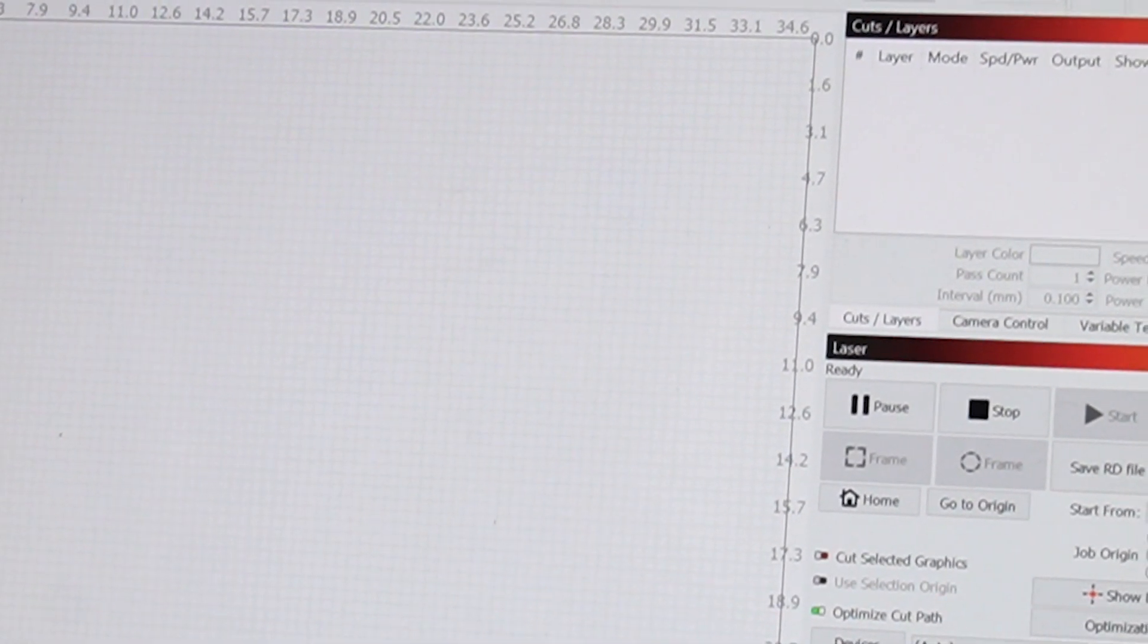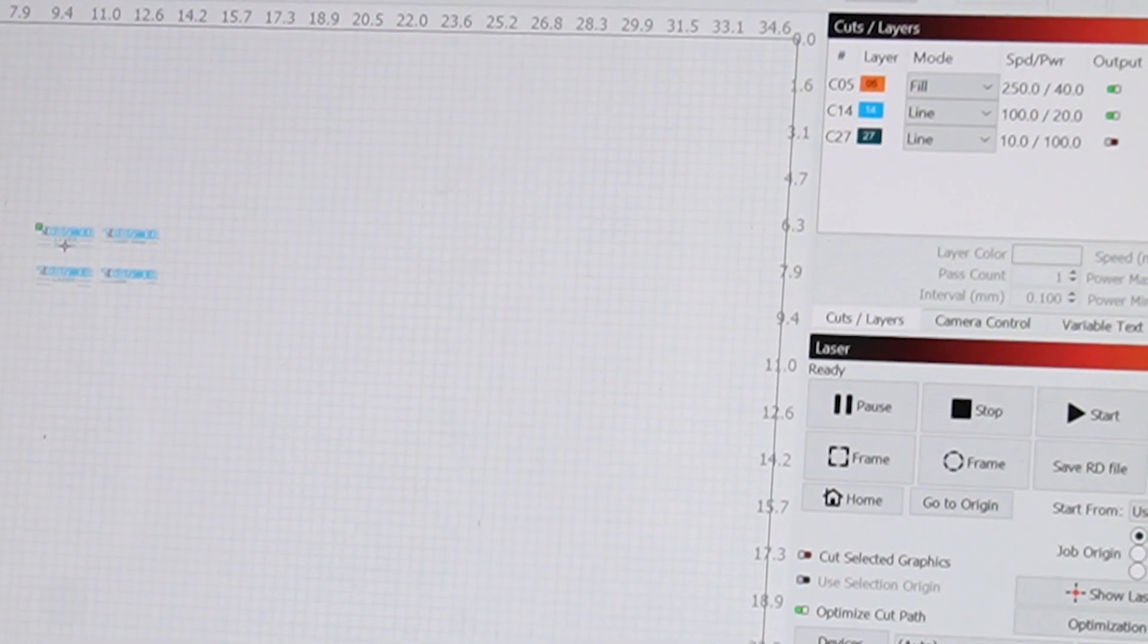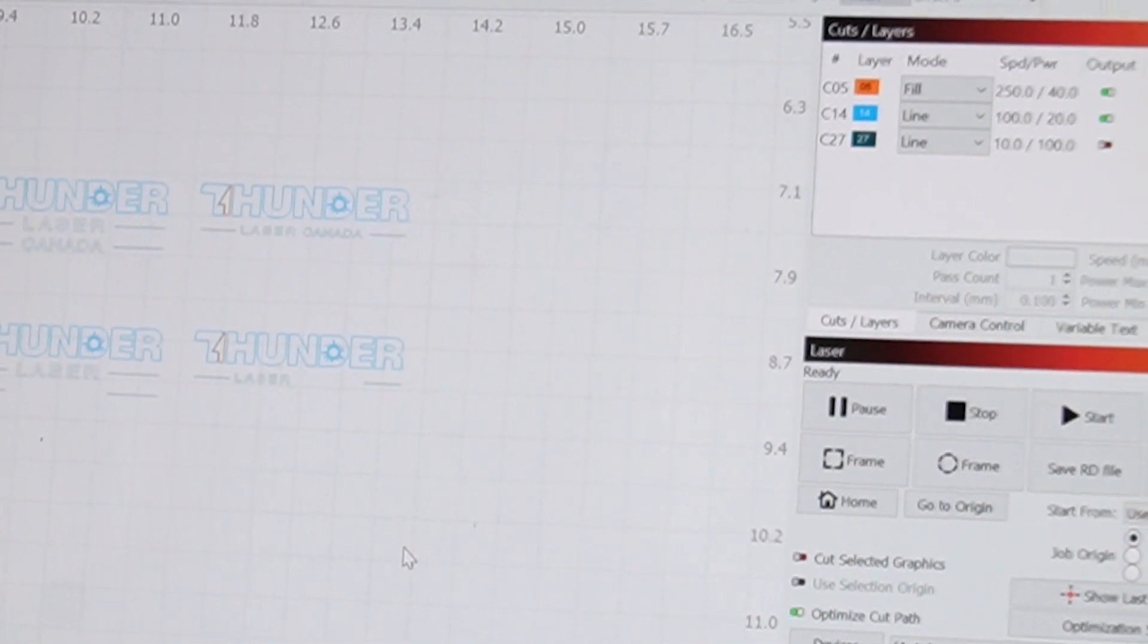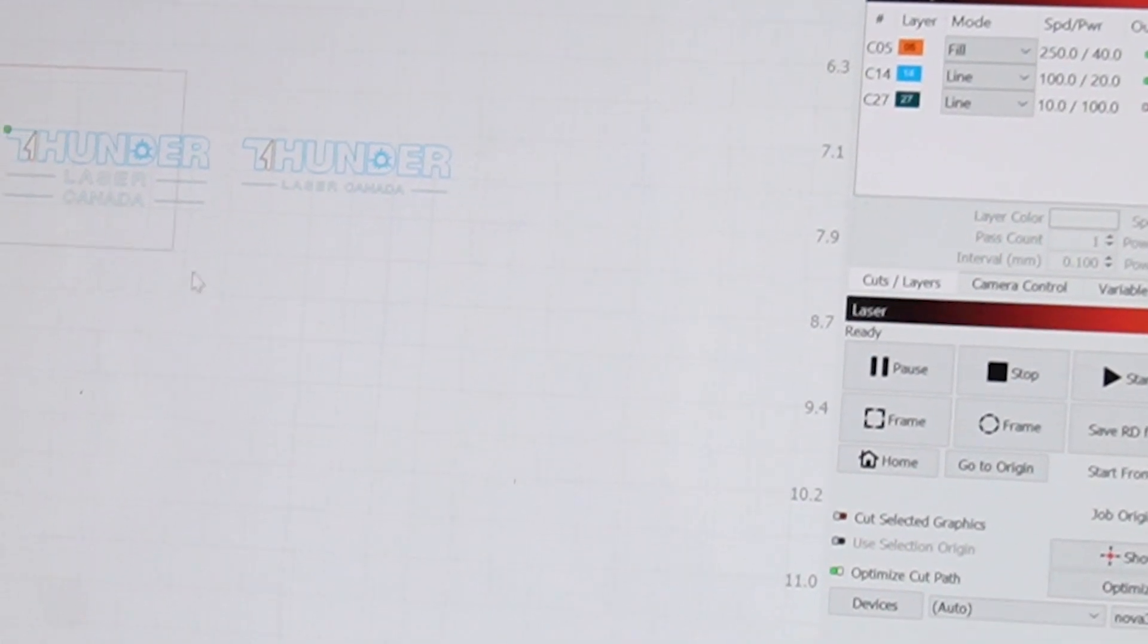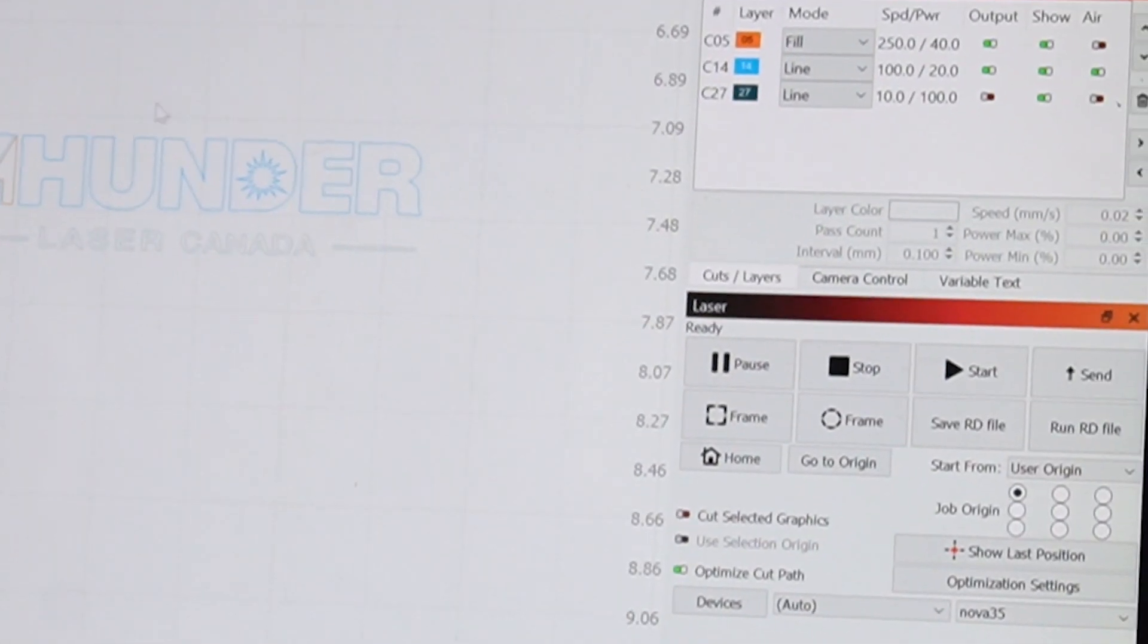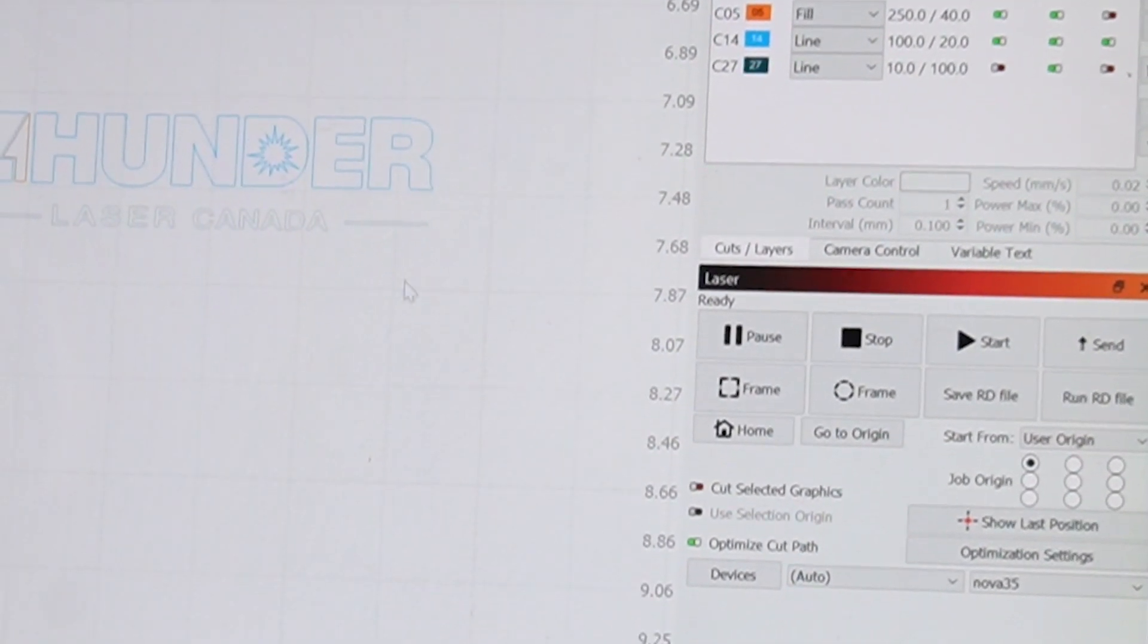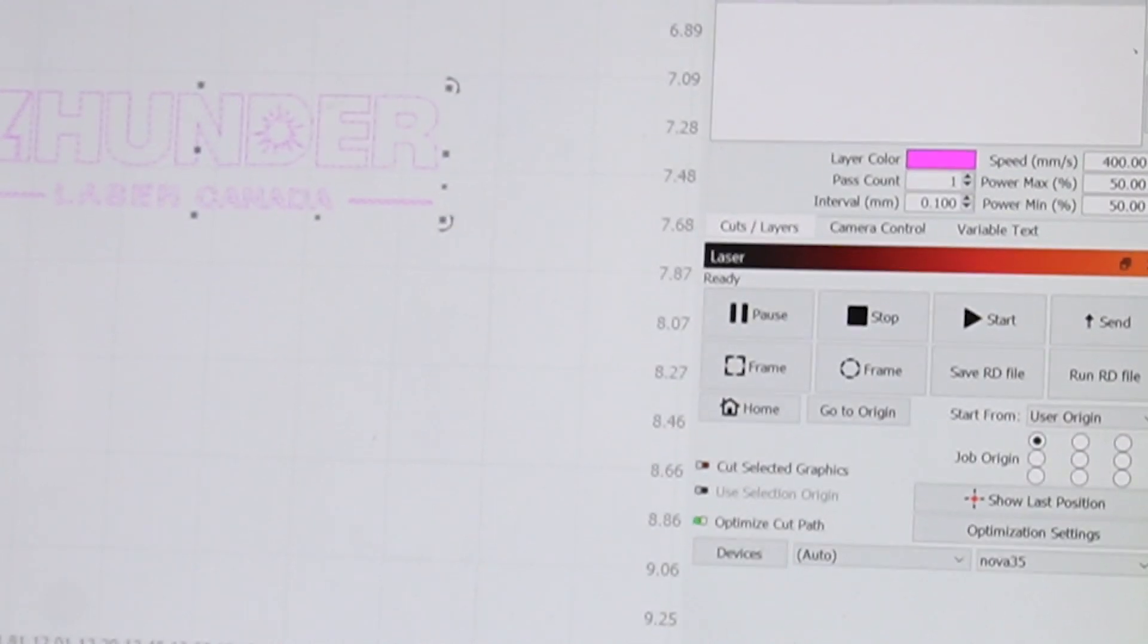Now I'm going to import the file. So I'm going to do our logo here. Just drag that file into Lightburn. Let's see, we'll use this one. We've got a bunch of different colors here. I'm just going to set them all to the same color. I'll set it to pink here.